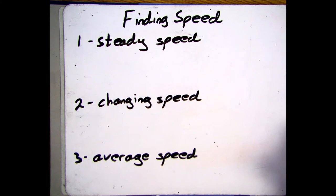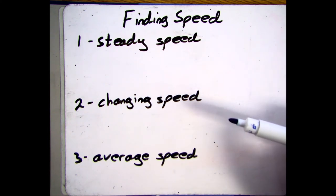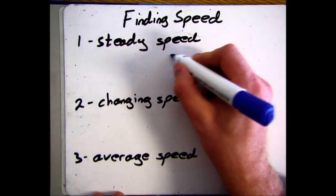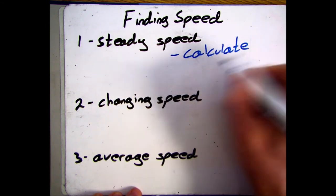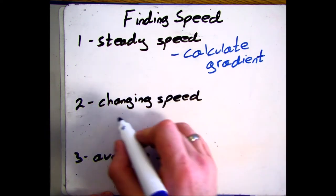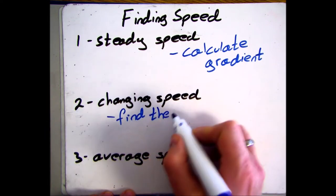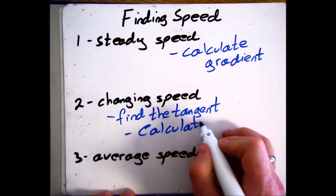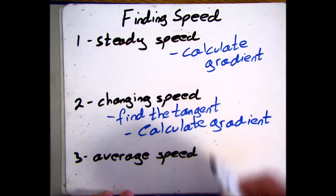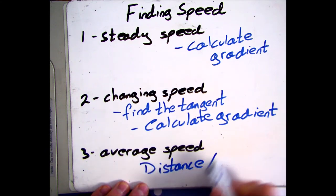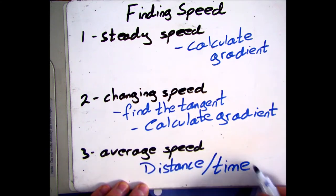We can also be asked to calculate speed from a distance-time graph. There are three ways they can ask you to do this: find speed when the object is at a steady speed, find speed when the object is changing speed, or find the average speed. For a steady speed, we calculate the gradient of the slope. For a changing speed, we draw a tangent to the line and find the gradient of that tangent. For average speed, it's a straightforward speed equation — change in distance divided by time taken.